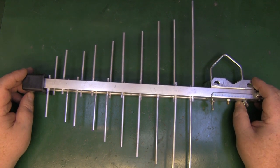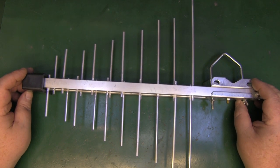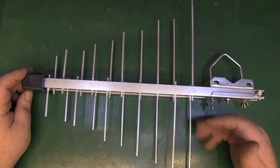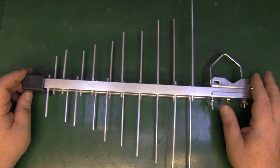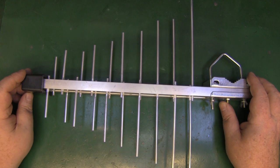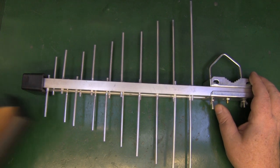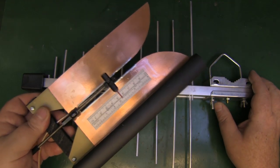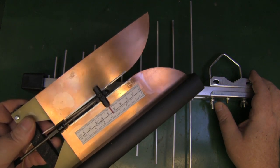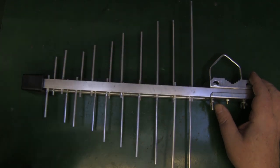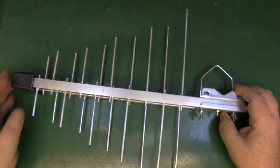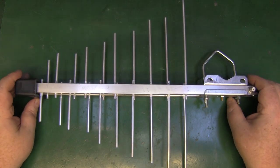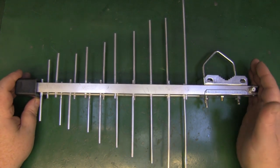The thing about the log periodic is it's a particularly broadband antenna and tends to work on a broad range of different frequencies. That's why you will often see these in an RF test lab, because they work over such a wide range of frequencies.